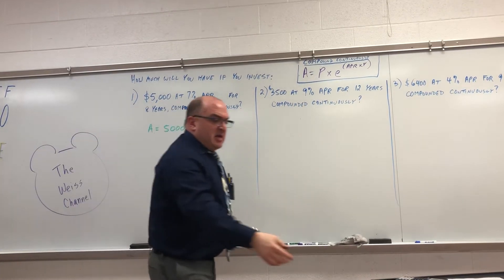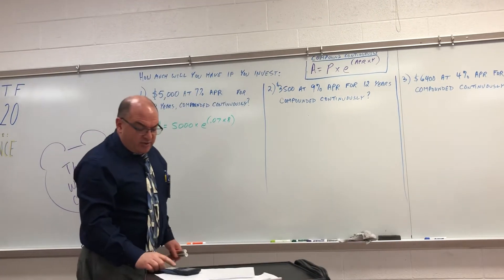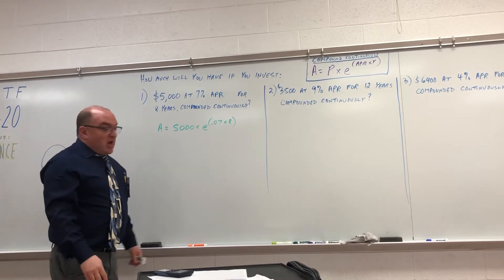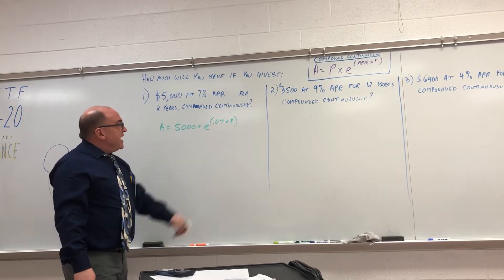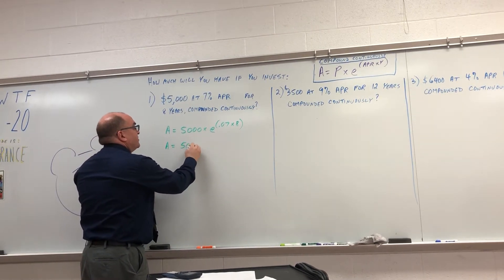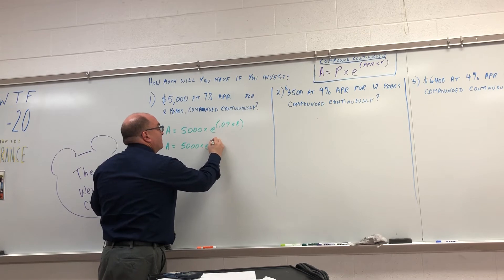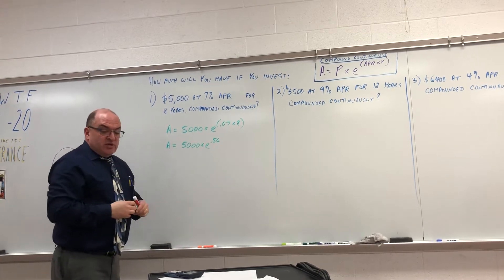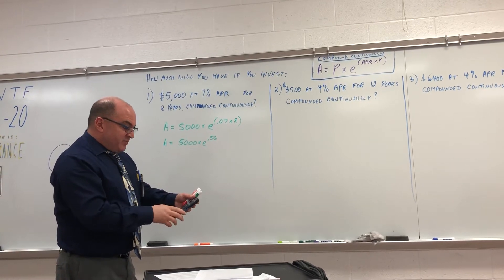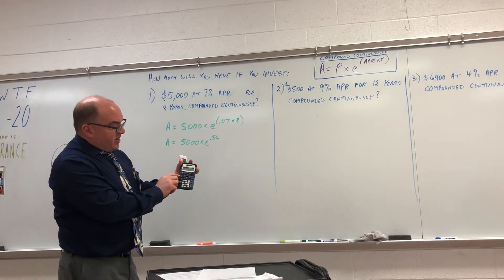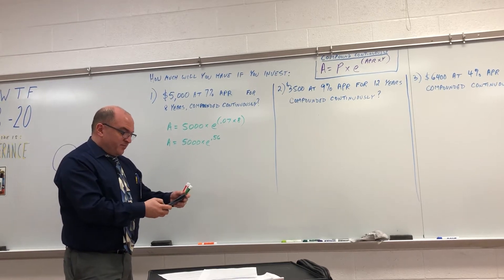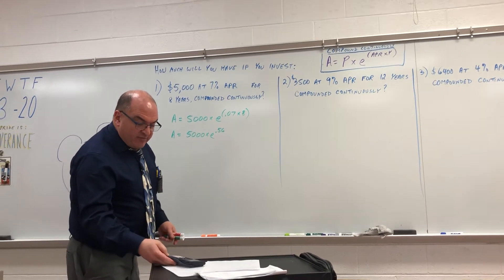On your calculator — on everyone's calculator, even on the cell phone calculators — you have an E key, and we're going to use the E to the X key. So I'm going to do 0.07 times 8, which I know to be 0.56. So A equals 5,000 times E to the 0.56 power. On this calculator, you'll do 5,000 times the E to the X key, and type 0.56. And you should get 8,753.36.